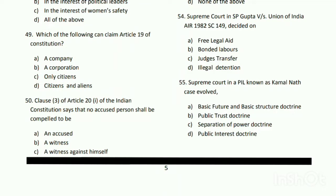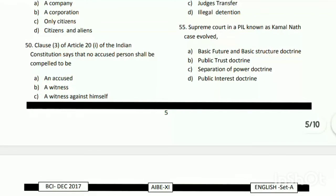Question number fifty-four: the Supreme Court in SP Gupta versus Union of India, AIR 1982 SC 149, decided on what? The answer is C - judges' transfer. Question number fifty-five: the Supreme Court in the case known as Kamal Naath case involved what? The answer is B - the public trust doctrine.